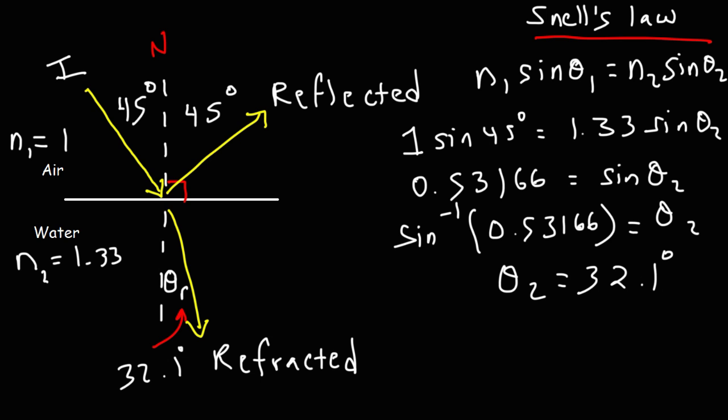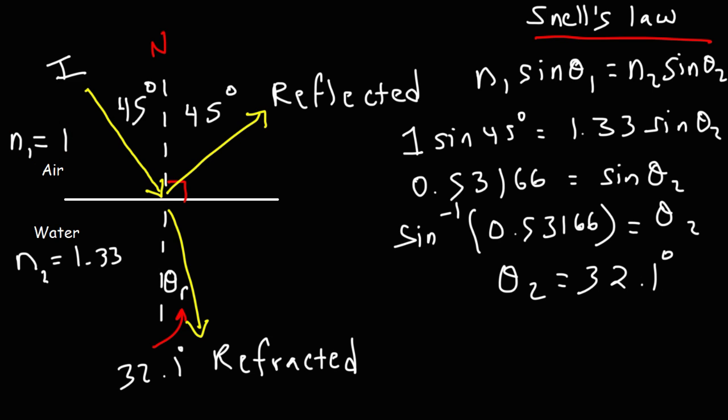Notice that as the incident ray moves from a material with a low index of refraction to a material with a higher index of refraction, the ray bends closer to the normal line — the angle decreased from 45 to 32.1 degrees. The reverse is true: if the incident ray travels from a high index to a low index material, the angle increases and the ray bends away from the normal line.